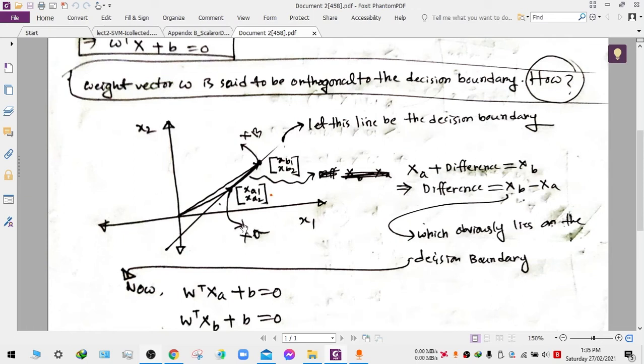You can think of these as two vectors from the origin: one to this point whose coordinates are XA1 and XA2, and another point on the decision boundary, XB, which we can represent as a vector of the form XB1 and XB2.